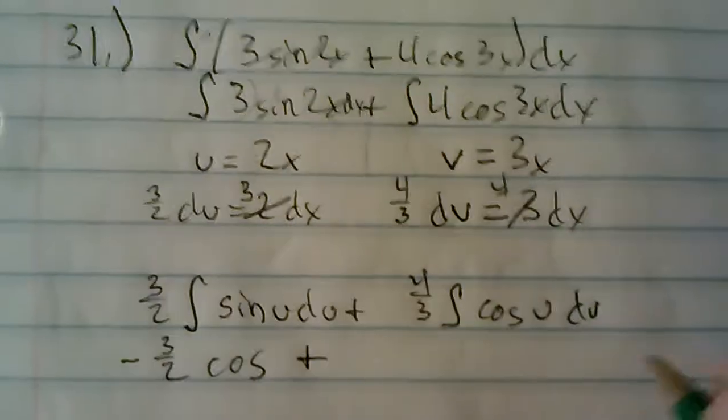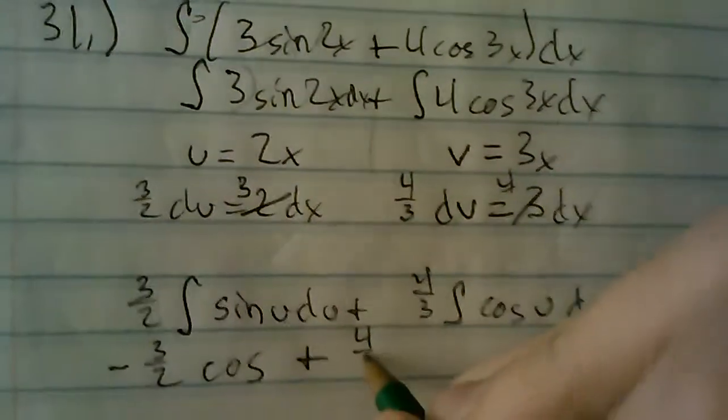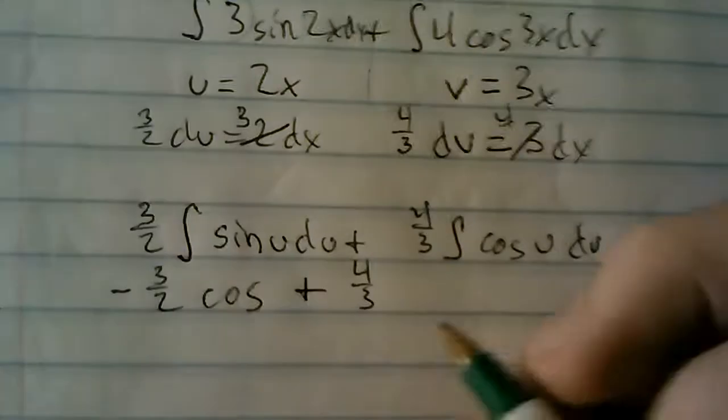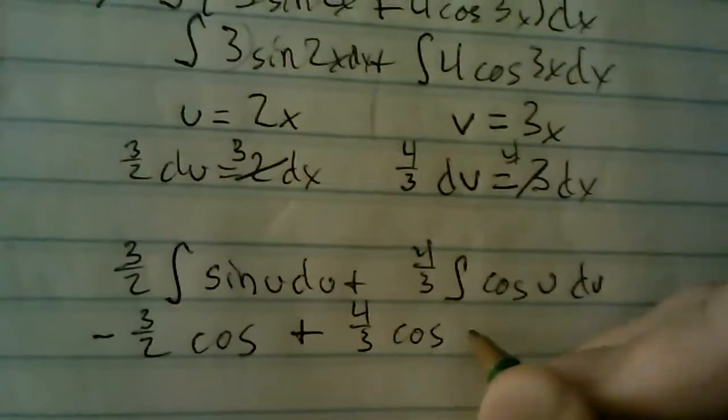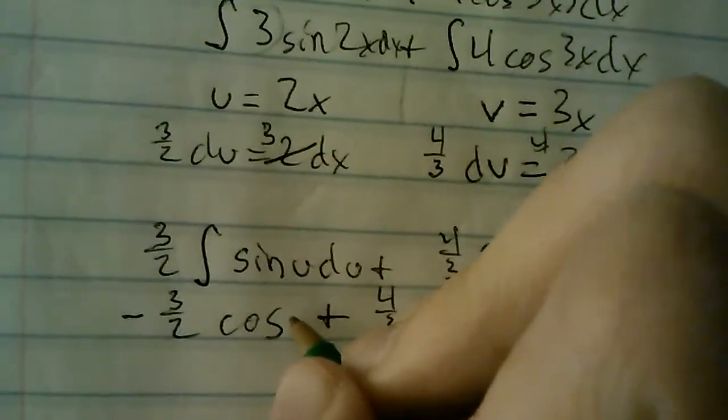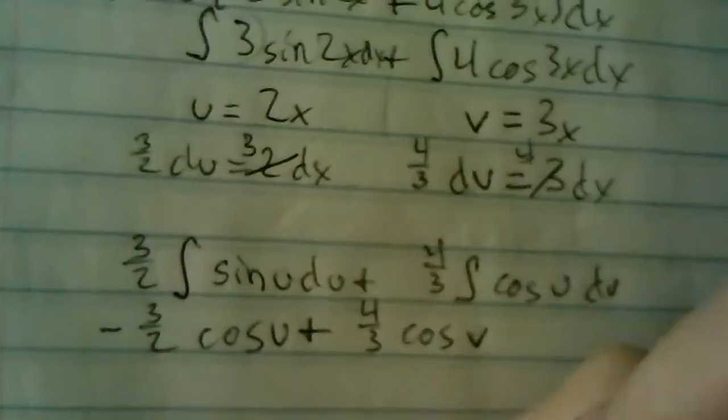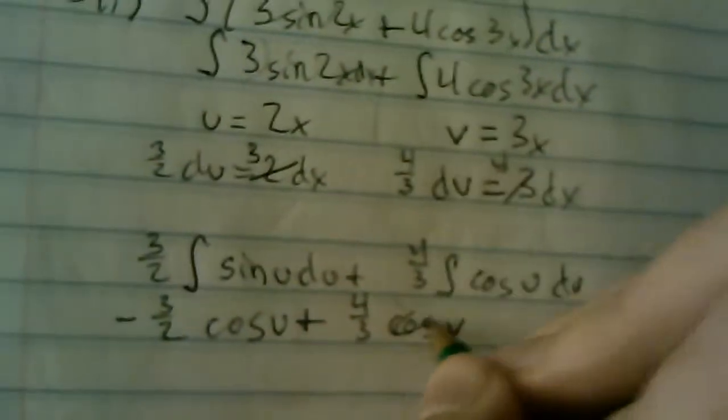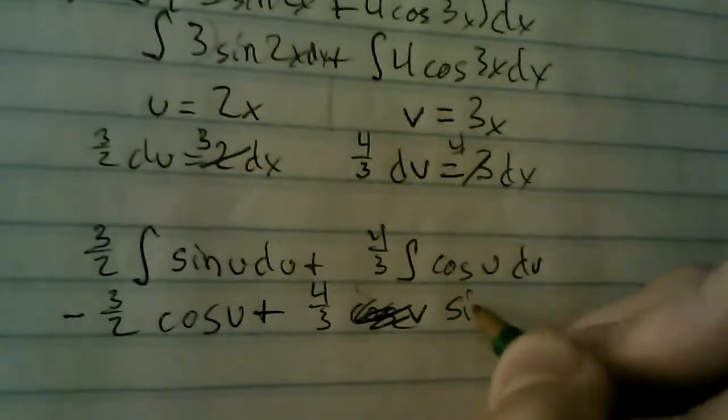So, plus four thirds cosine. It's going to go to sine. Cosine of v. Oops, cosine goes to sine. Cosine goes to sine of v. Plus c at the end.